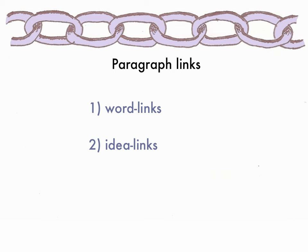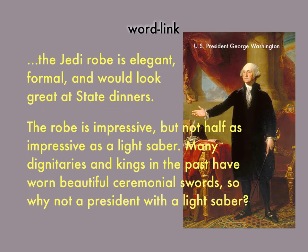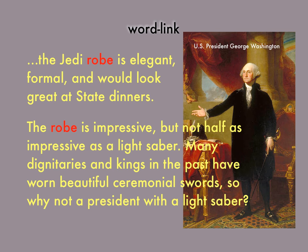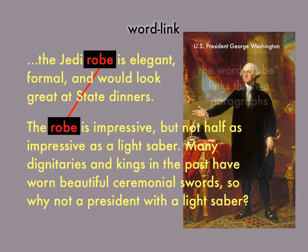Paragraph links are less obvious and more graceful than the devices I just showed you. Before I explain what it is, here's an example of a word link. 'The Jedi robe is elegant, formal, and would look great at state dinners. The robe is impressive, but not half as impressive as a lightsaber.' See how the word 'robe' is used twice? This writer has taken the word from the first paragraph and repeated it in the first sentence of the next paragraph. That word links the two separate paragraphs.